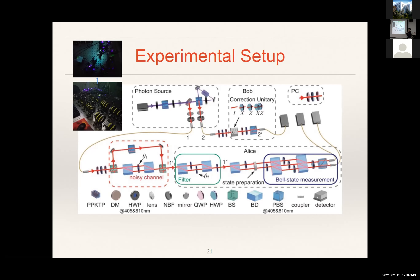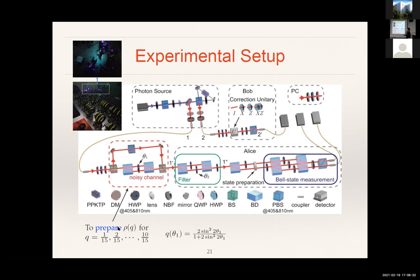One of these photons is put into a fiber and sent to Alice, and the other photon is put into another fiber and sent to Bob. Over here, we have a noisy channel, which is meant to prepare the two-qubit states I told you about. This state is a one-parameter family, and in the experiments we prepare 10 different values. The parameter q is controlled by changing the angle of the half-wave plate — by changing these angles we can change the values of q and prepare different states.